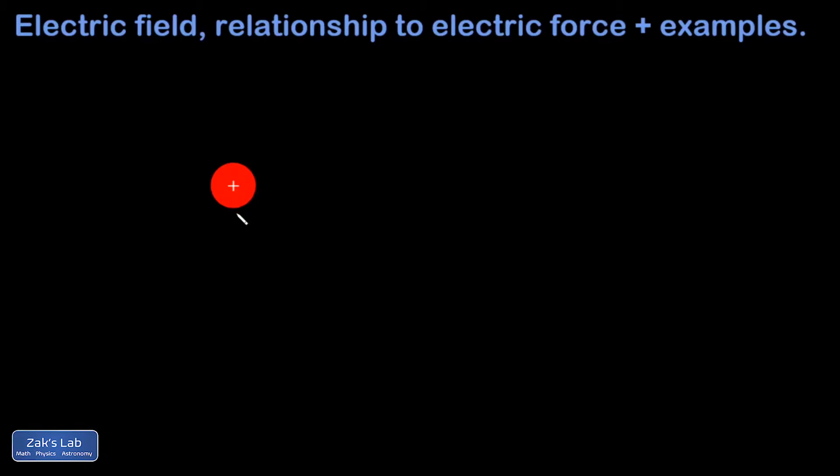So we start with this isolated positive point charge, and we're going to call this the source charge. Coulomb's law says that this source charge would exert a repulsive force on any positive charge in the vicinity. So I'm going to just draw one real quick. And we would normally call that second charge the test charge. It's the one that we're using to feel what the original source charge is doing. So if there was a test charge in the vicinity, it would be pushed away from that source charge.